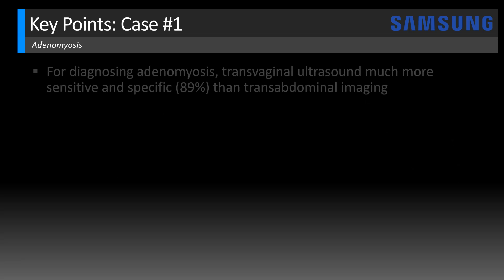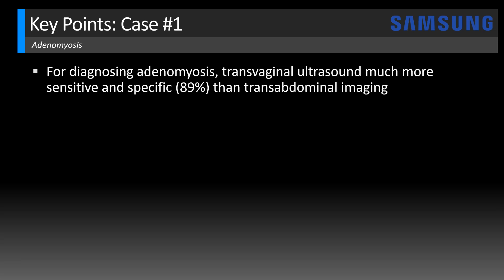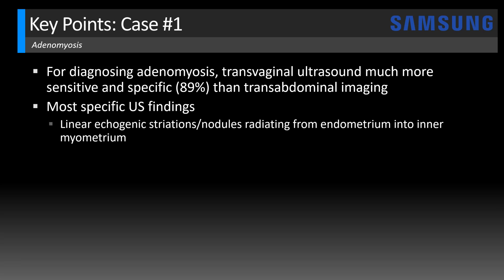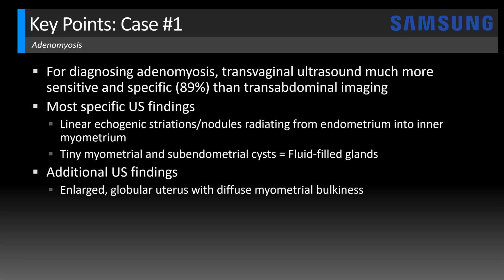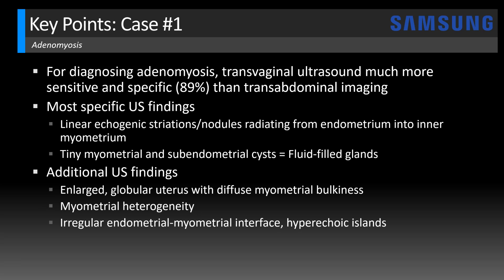Key points for case one: For diagnosing adenomyosis, transvaginal ultrasound is much more sensitive and specific — about 89% — compared with transabdominal imaging. The two most specific ultrasound findings include linear echogenic striations or nodules that radiate out from the endometrium into the inner myometrium, and the presence of tiny myometrial and sub-endometrial cysts corresponding to fluid-filled ectopic glands. Additional findings include an enlarged globular uterus with diffuse myometrial bulkiness and heterogeneity, an irregular endometrial-myometrial interface, hyperechoic islands of ectopic endometrial tissue, and pencil-thin posteracoustic shadowing — often described as Venetian blind or rain shower shadowing.